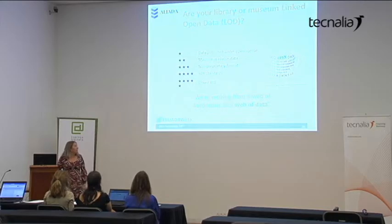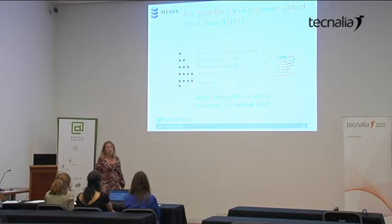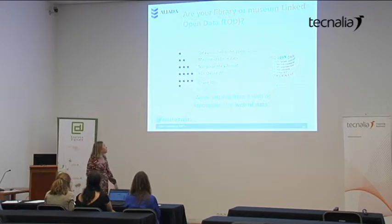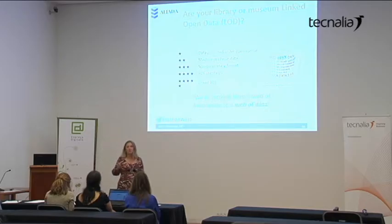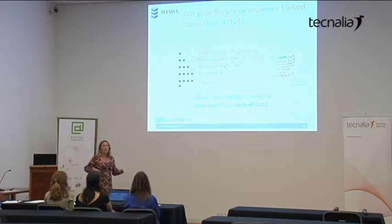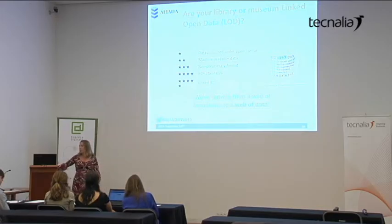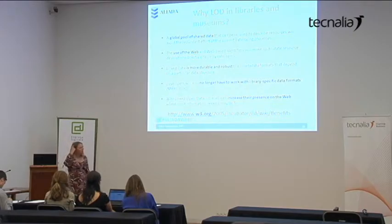Is your library or museum linked open data? It is open linked data if you are five stars. What does that mean? With one star you have data published under a license. With two stars you also have machine-readable data. With three stars we have a non-proprietary format. With four stars we use RDF standards. And with five stars we link our data to other datasets. With five stars — with linked data — we are moving from the web of documents, the web that we know, to the web of data where machines can exploit the published data. But why are we applying linked data in museums and libraries?